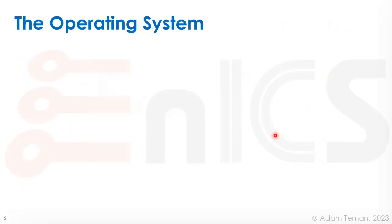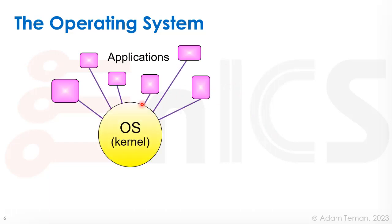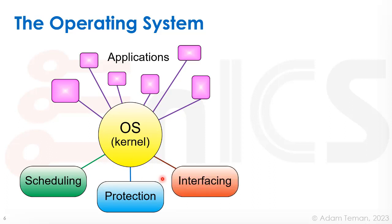That's where the operating system comes in. In the operating system we have our level of applications that we want to run, and they all connect to the operating system — what we call the kernel. The kernel is going to be in charge of doing several things: scheduling the different applications onto the hardware, protecting the different applications and users from each other, and enabling us to interface between the different applications and the hardware.